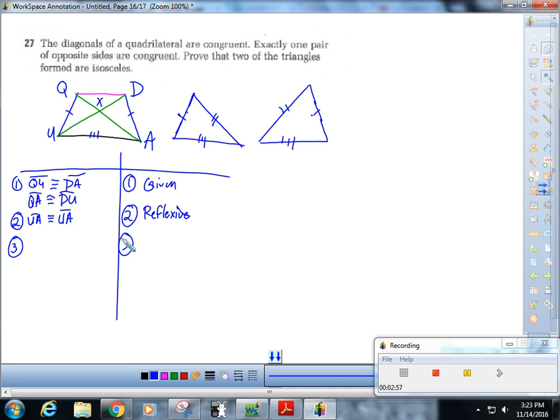And so now I can say that triangle QUA is congruent to triangle DAU by side-side-side. Okay, now I can say that angle QAU...